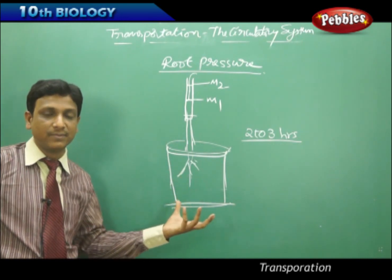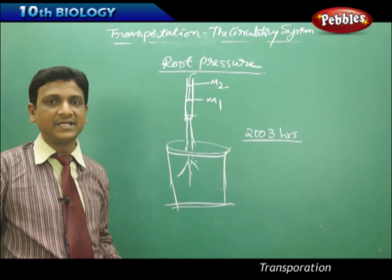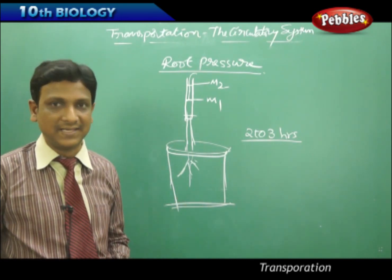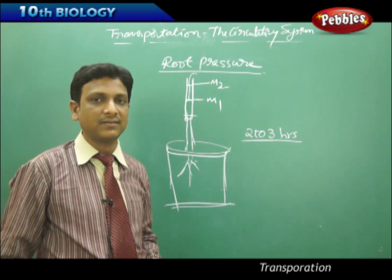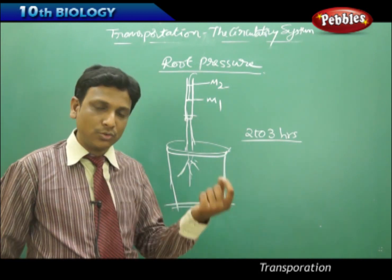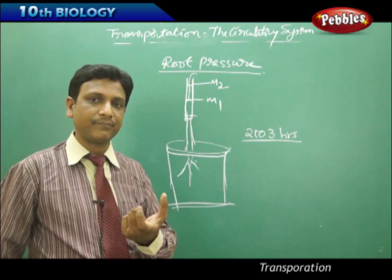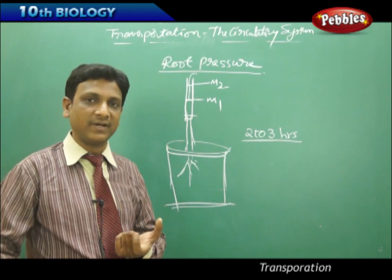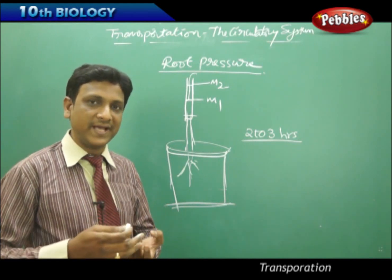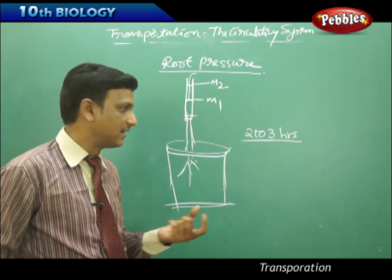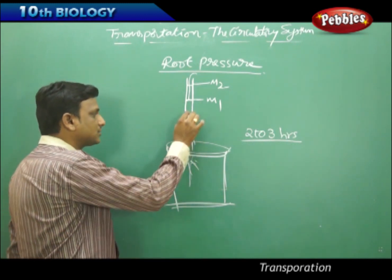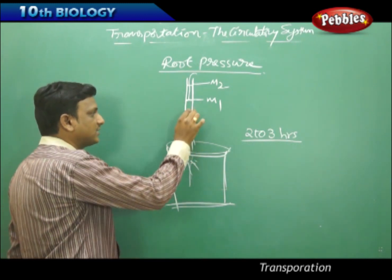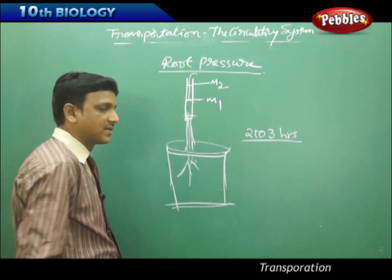How is root pressure created? It is due to the osmotic activity between the cells — primarily between the root hair and the soil environment. From the root hair, water passes to the next cell, then the next, until it reaches the xylem, through which the water is transported upward.